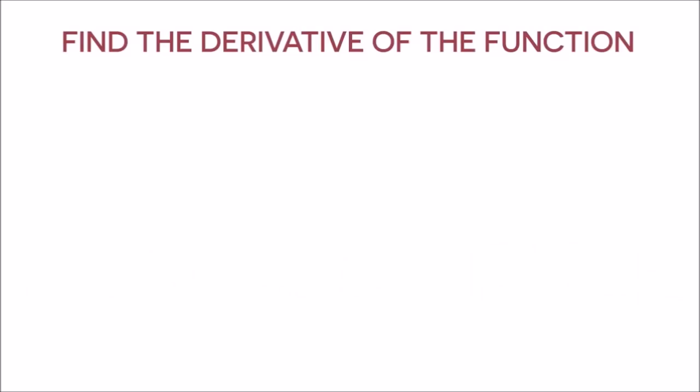All right, so here in this example, we need to find the derivative of the function 2x minus 5 multiplied by 7x cubed minus 3x squared.